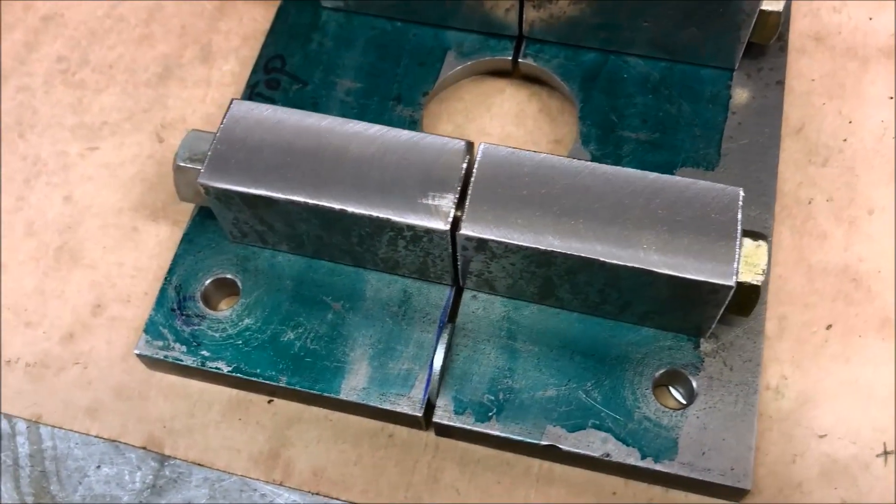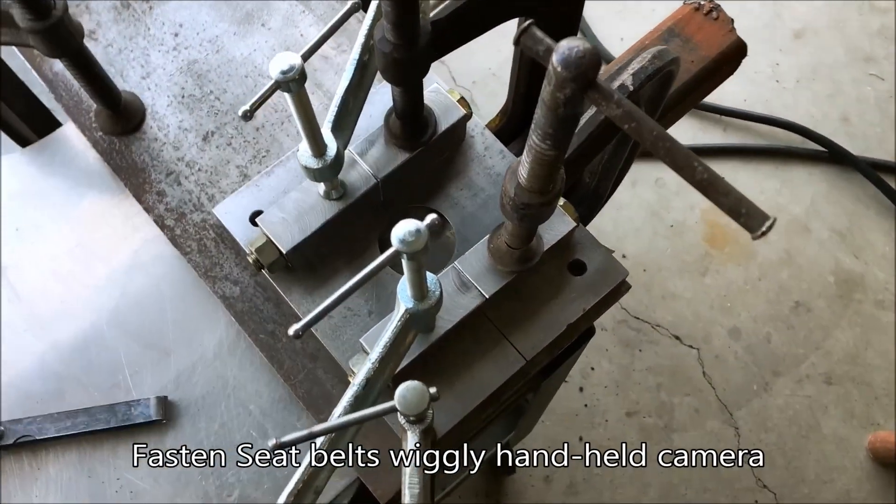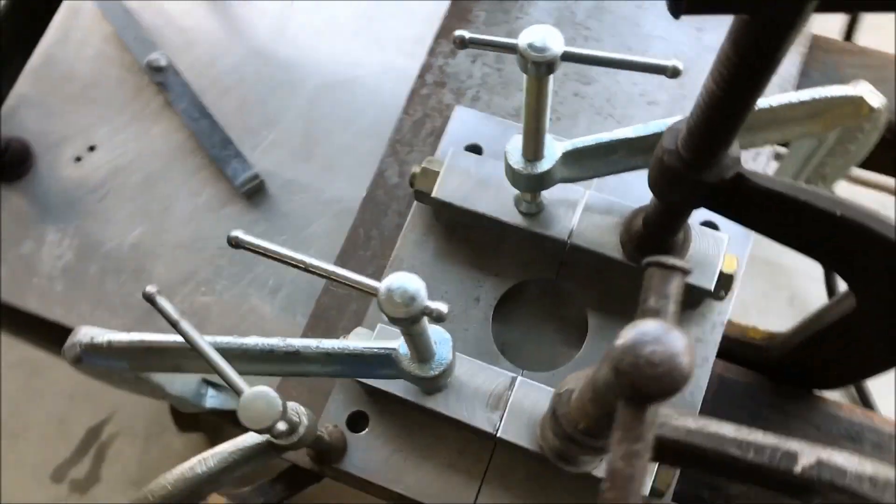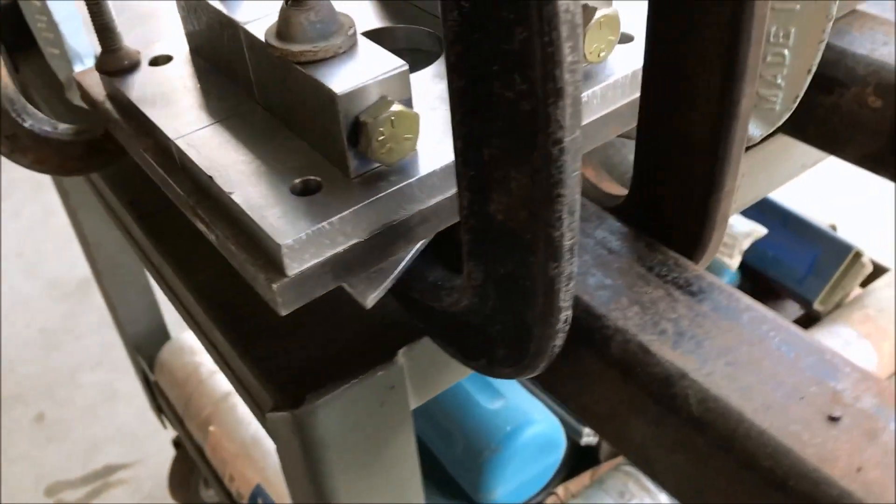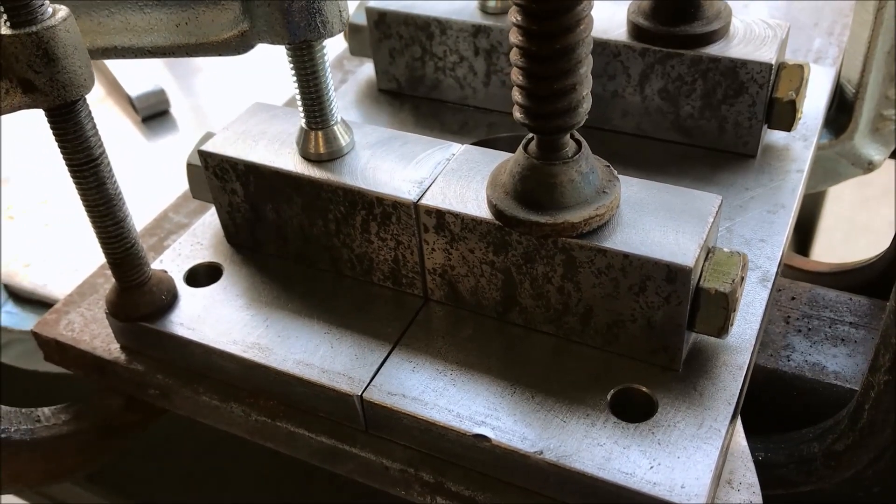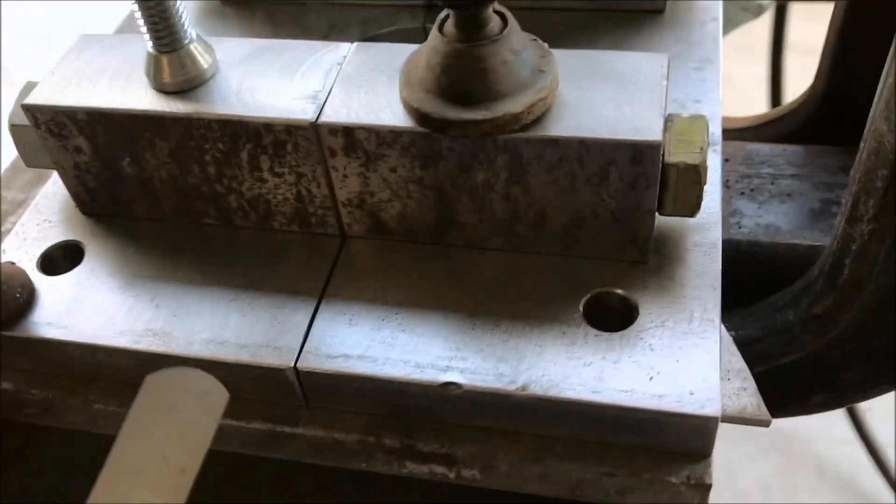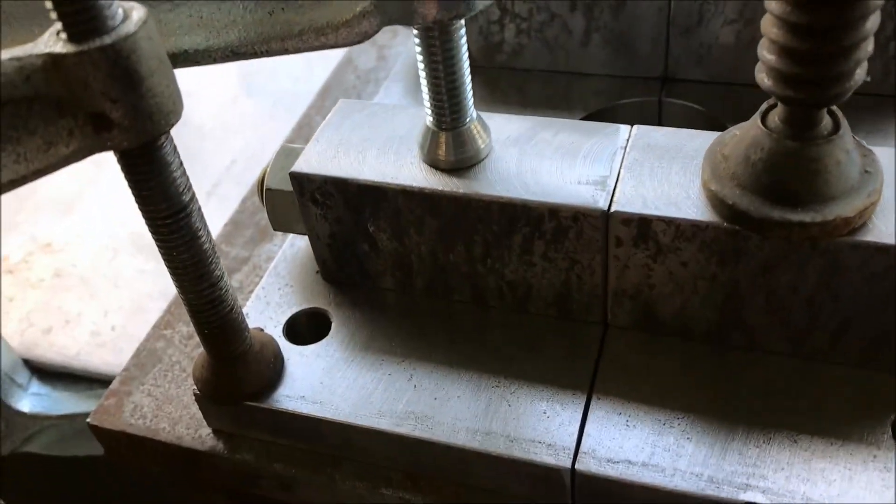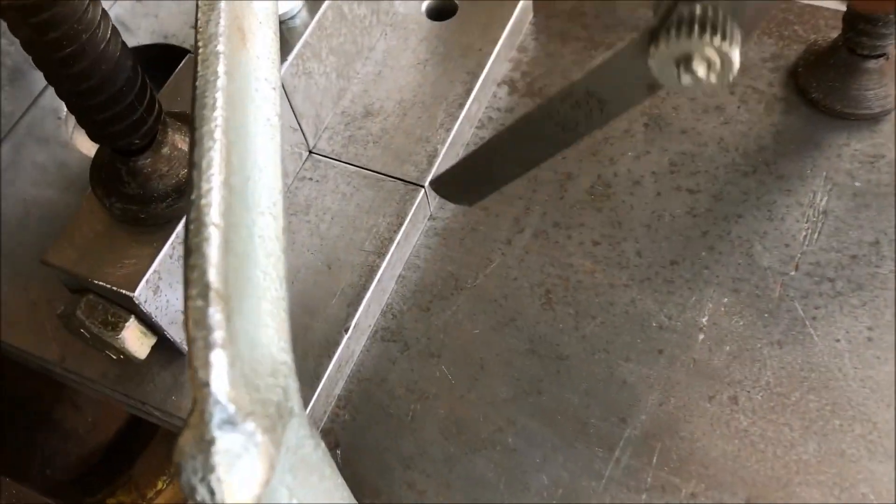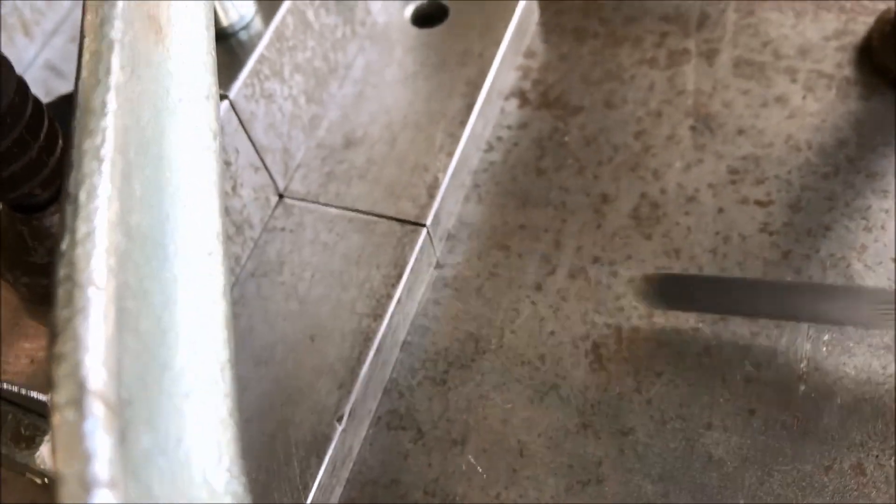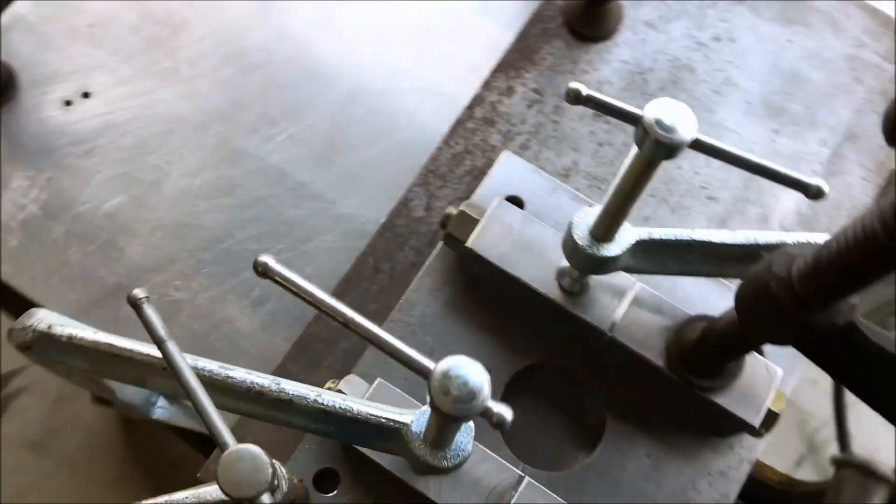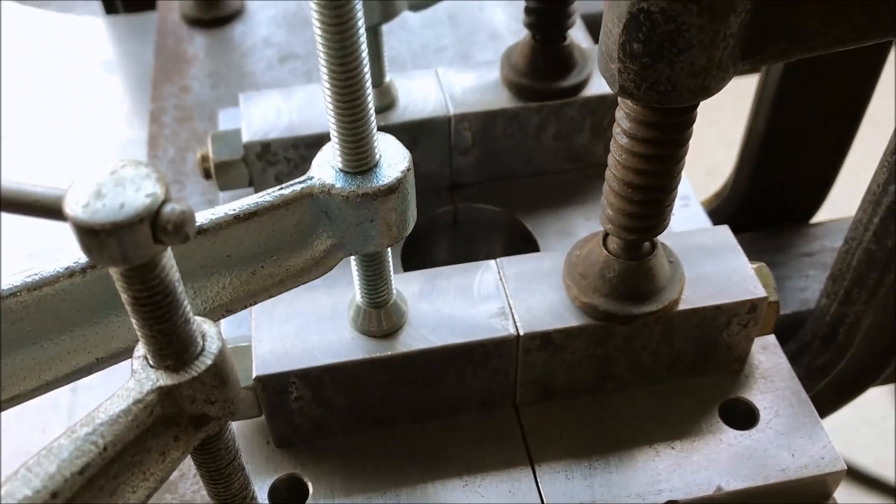Okay, so we're gonna get set up to weld these. Here's our setup, so we're clamped down. I've got a piece of half-inch plate underneath. Our draw blocks are bolted together and what I did is I put a 15 thousandths feeler gauge in here, so our plates are spaced 15 thousandths and our blocks are drawn up all the way, not real tight, just basically finger tight on the draw bolts.